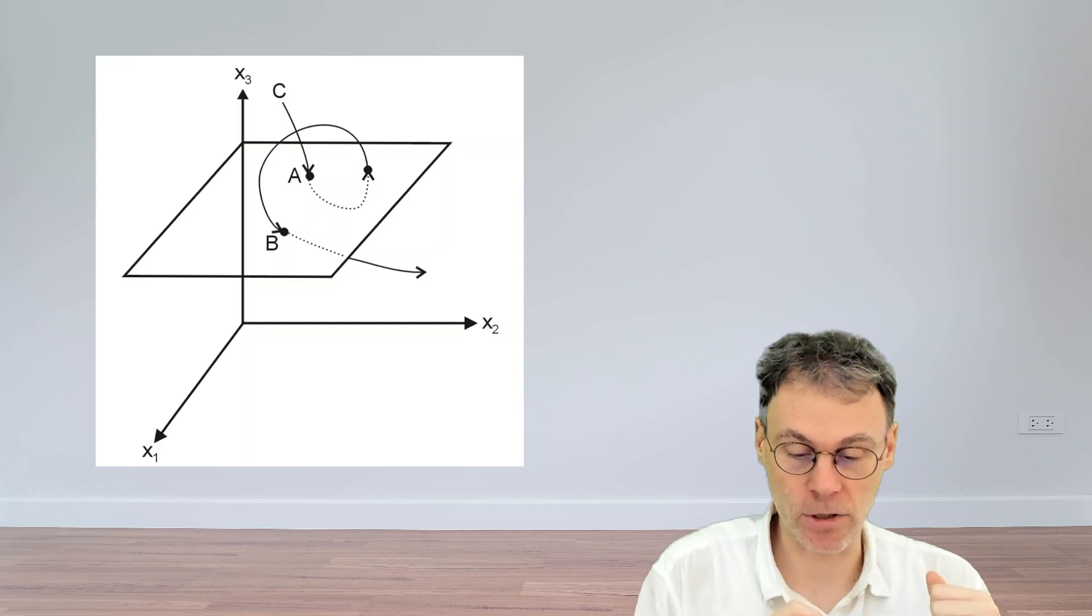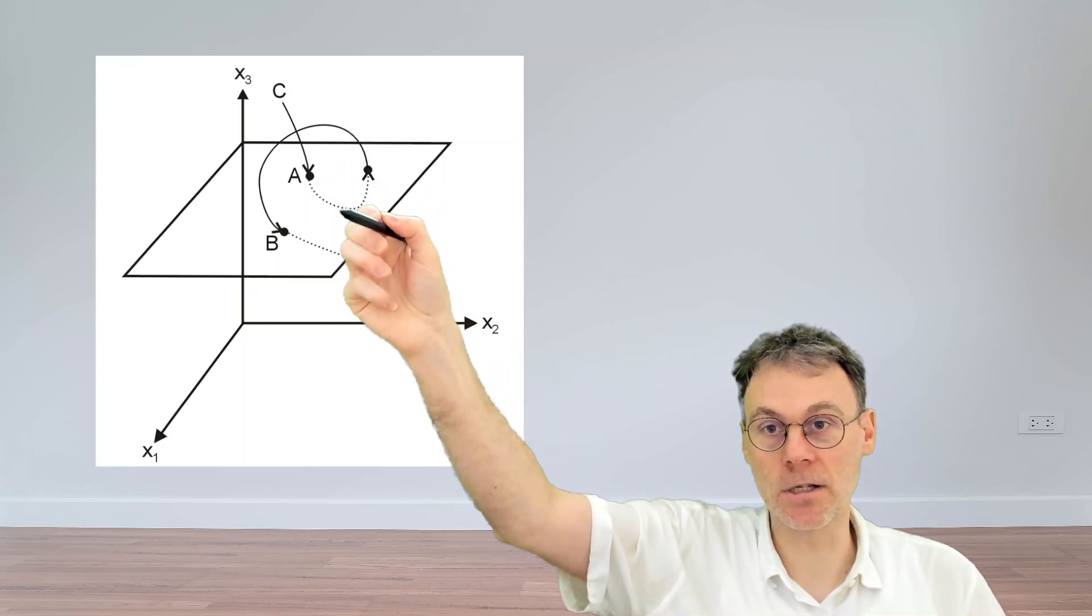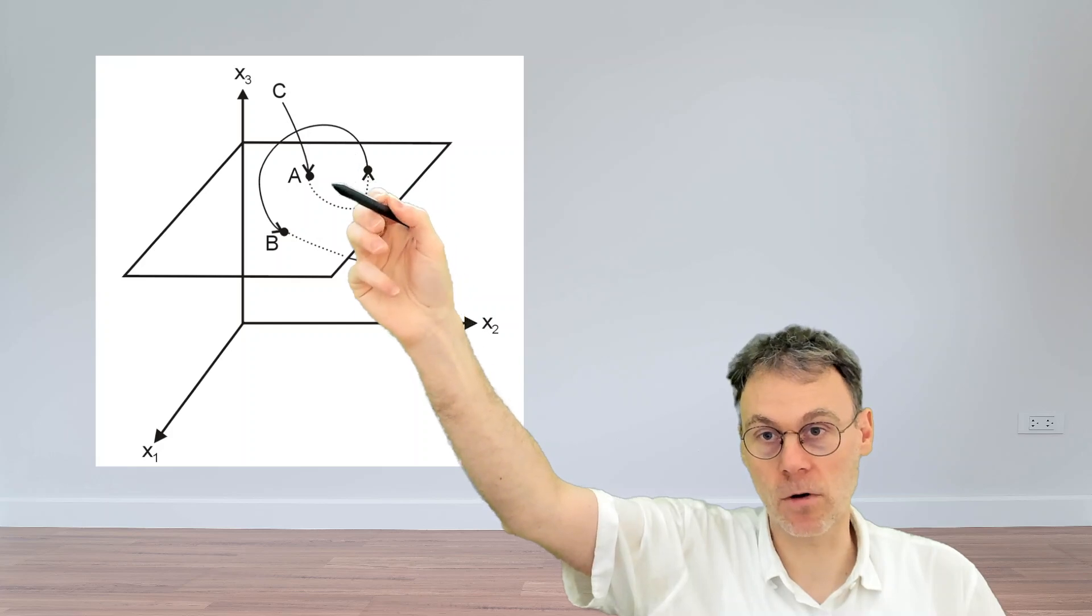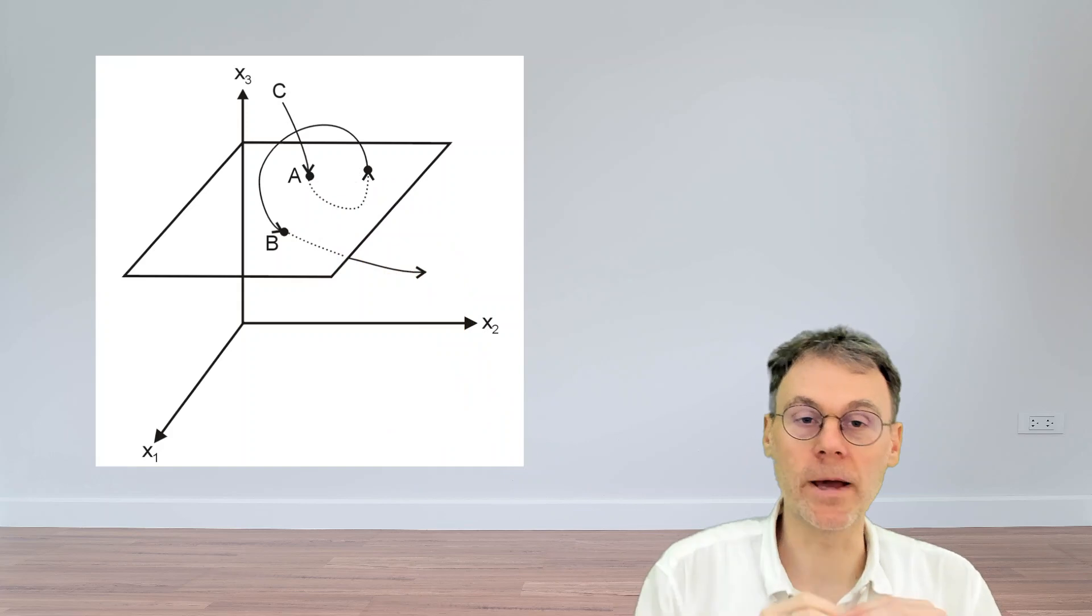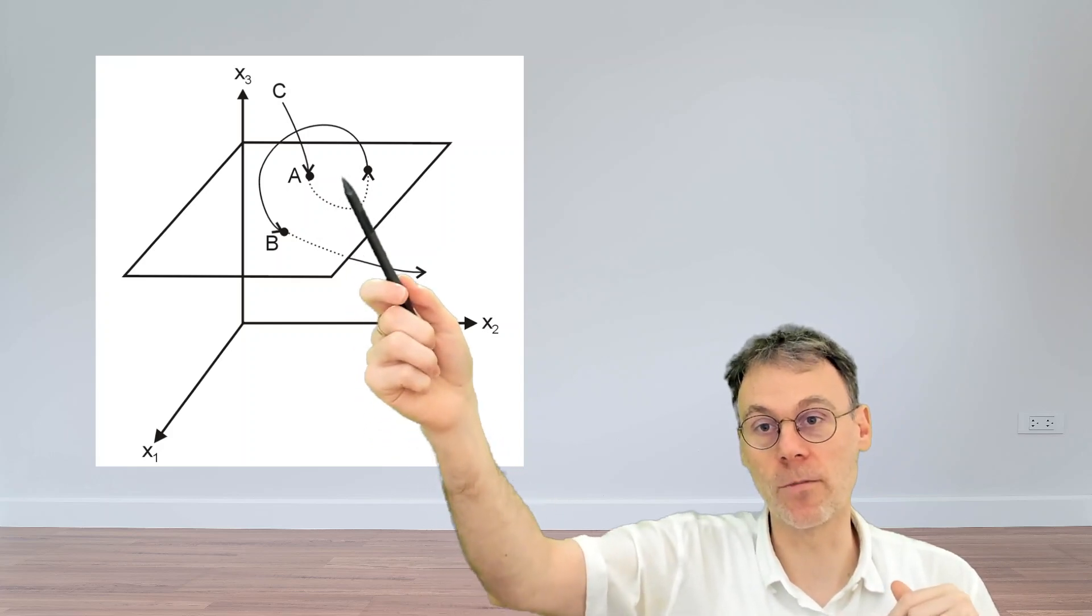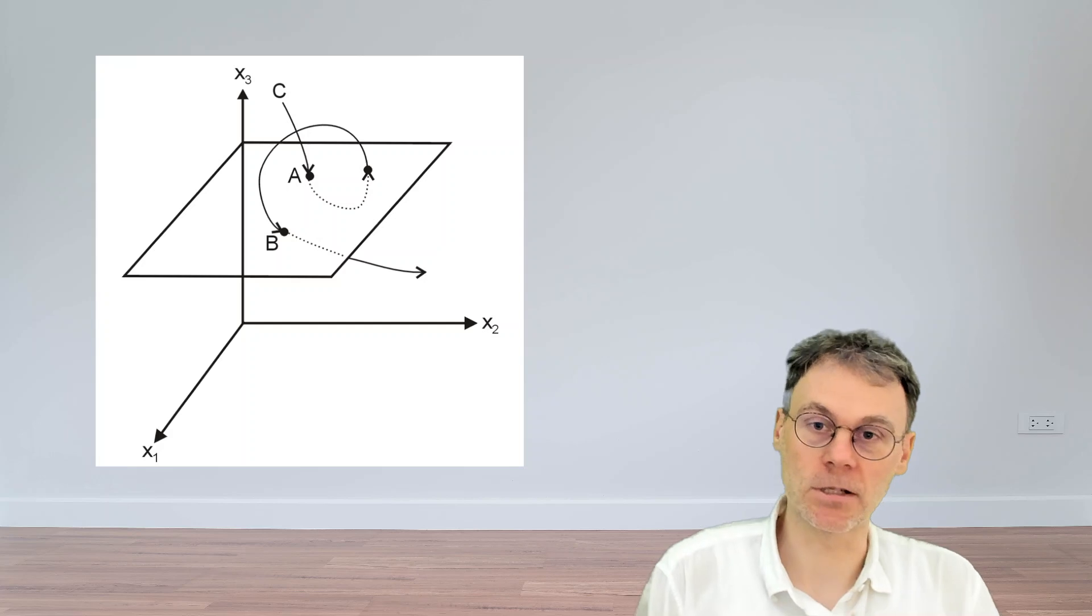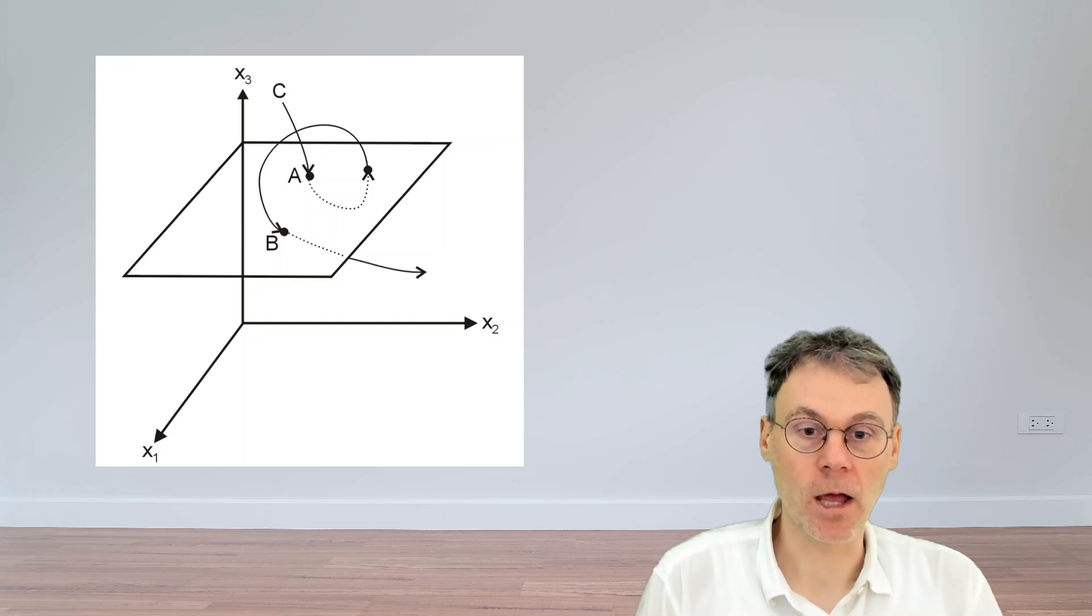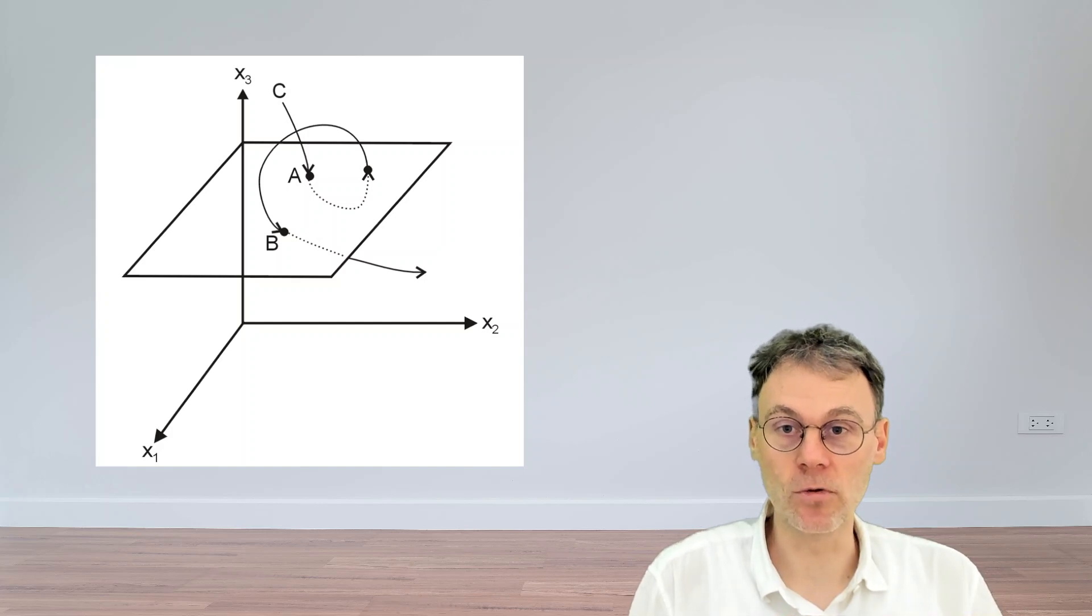We just follow this trajectory. And every time it pierces this plane going downwards, which happens, for example, at the point A and also at the point B, you make a note of it. And then the discrete time system is the system that takes you from the point A to the point B, and then to the next time this curve pierces this plane here.